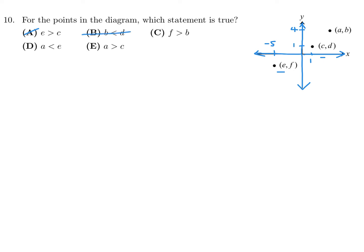Cross that out. Is A less than E? A is on the x-axis, about 3, and E is negative 5 — no. So by process of elimination it's E. Let's verify: is A greater than C? A is about 3 and C is about 1, so yes, 3 is greater than 1. Therefore the answer to question 10 is E.